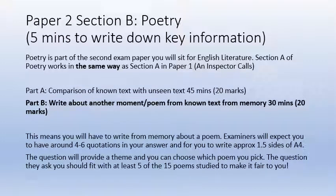Remember, last lesson we did Part A. There are two parts to the poetry question in the GCSE: Part A and Part B. Part A is where you look at one poem that you've studied and one that you've never seen before, and you do a compact comparison between the two. Part B is where they say talk about another poem in the collection linked to whatever theme they've chosen — so it's entirely from memory.